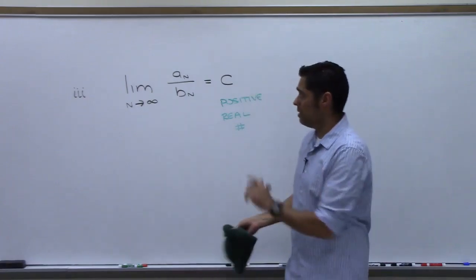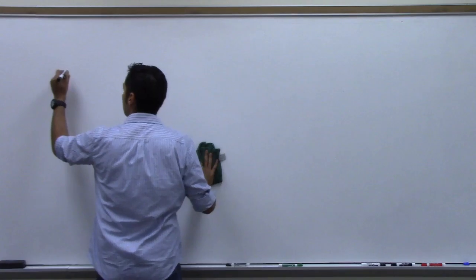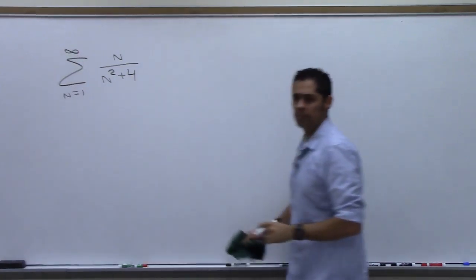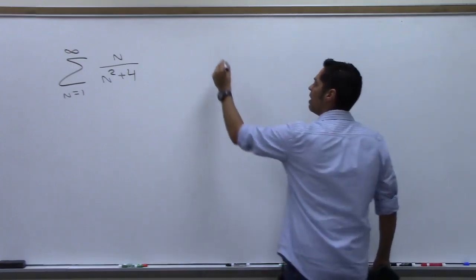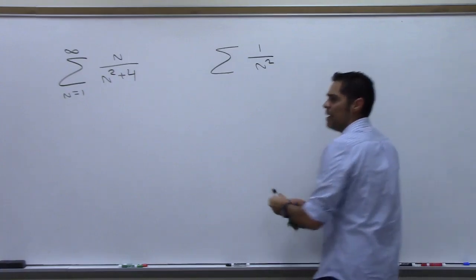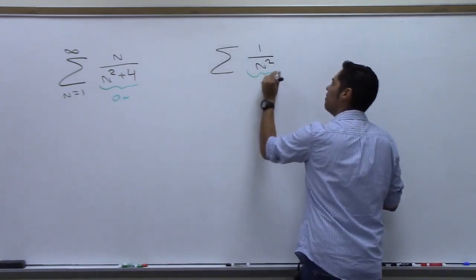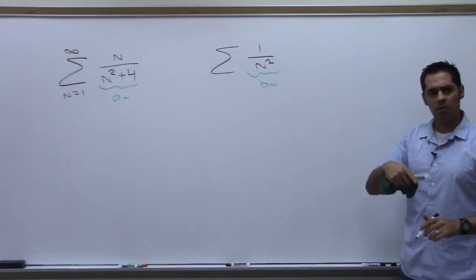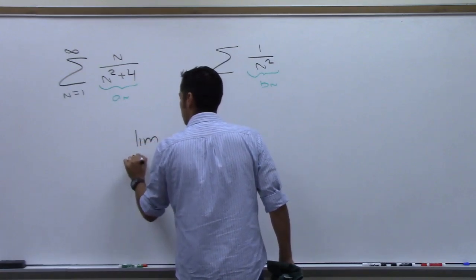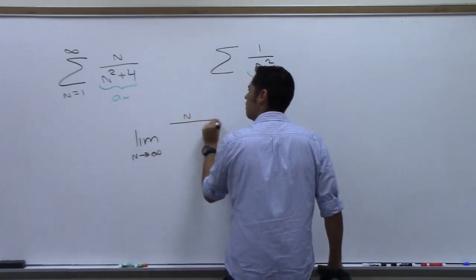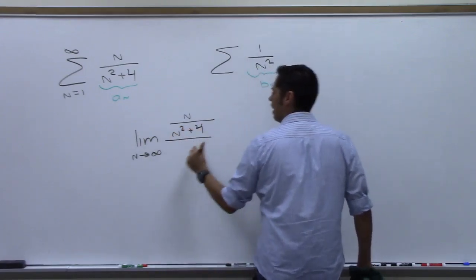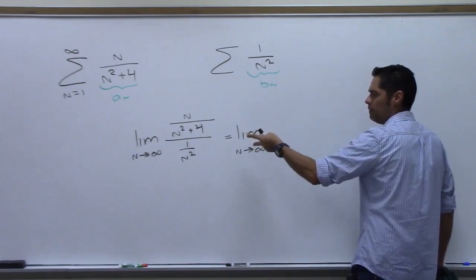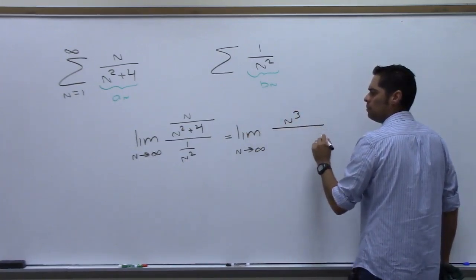Let me show you part three in action on the problem we already did — 1 over (n² + 4) compared to 1 over n². Our a_sub_n was 1/(n²+4) and b_sub_n was 1/n². Let's take the limit as n goes to infinity of a_sub_n over b_sub_n, which gives us the limit of n² over (n² + 4) ... wait, flipping gives n³ over (n² + 4).